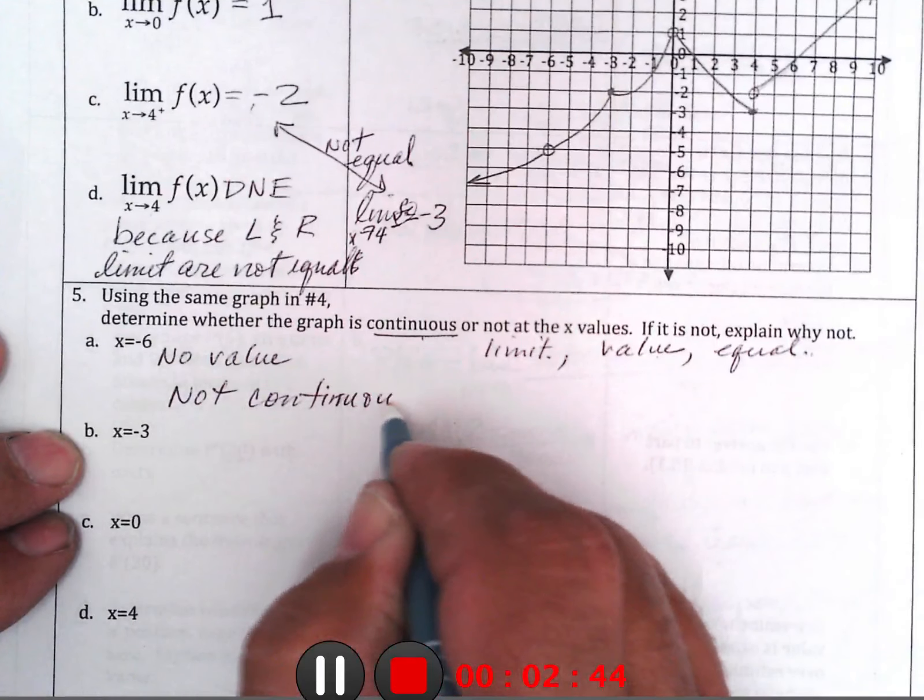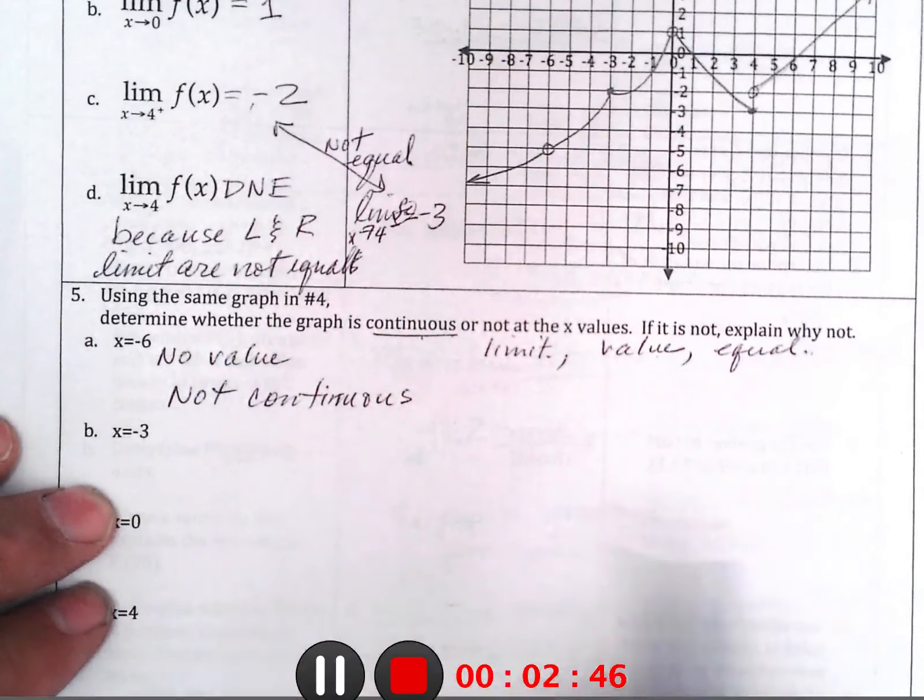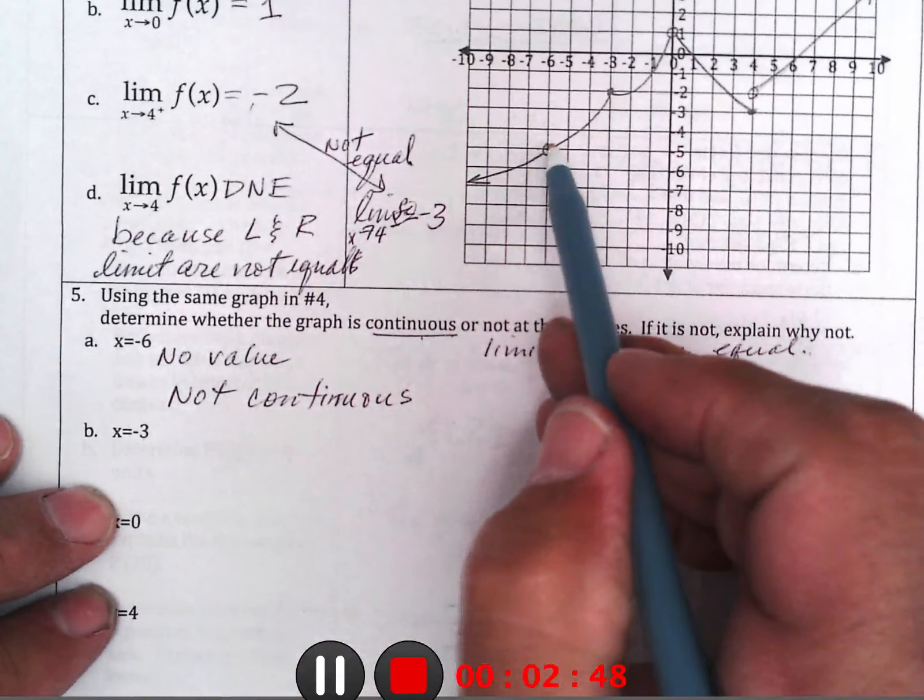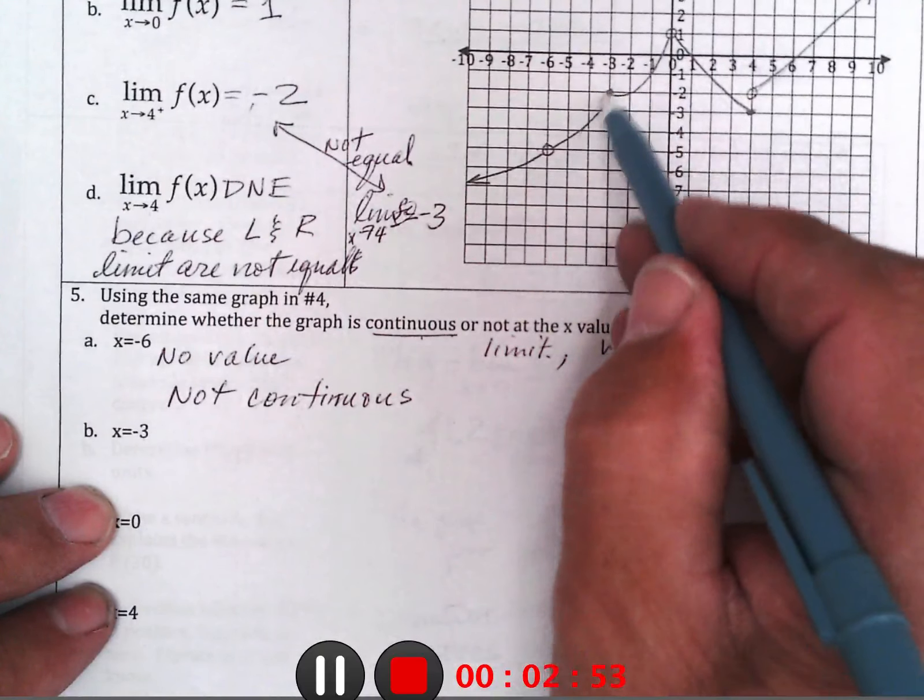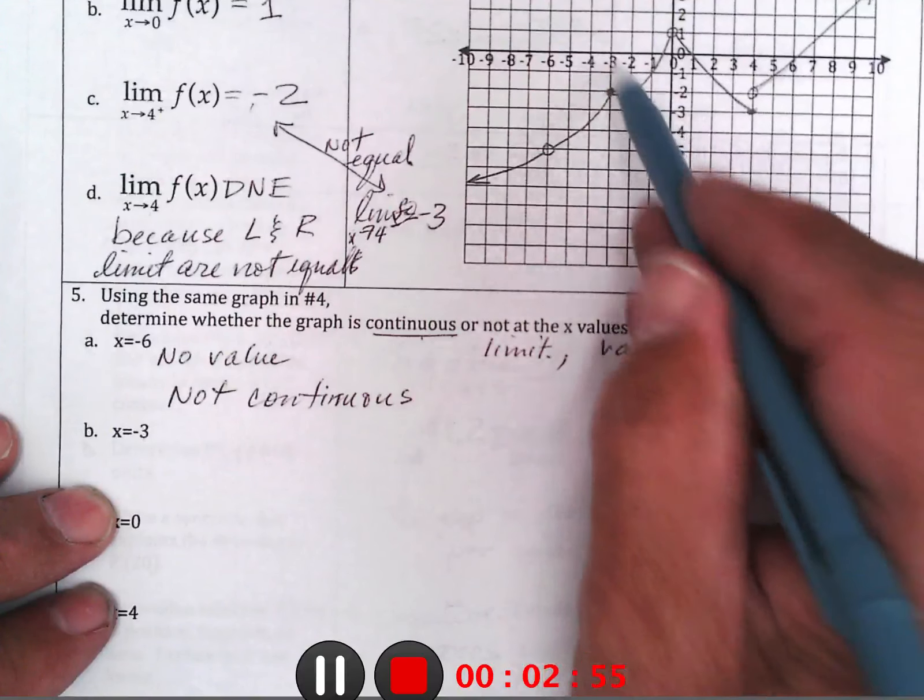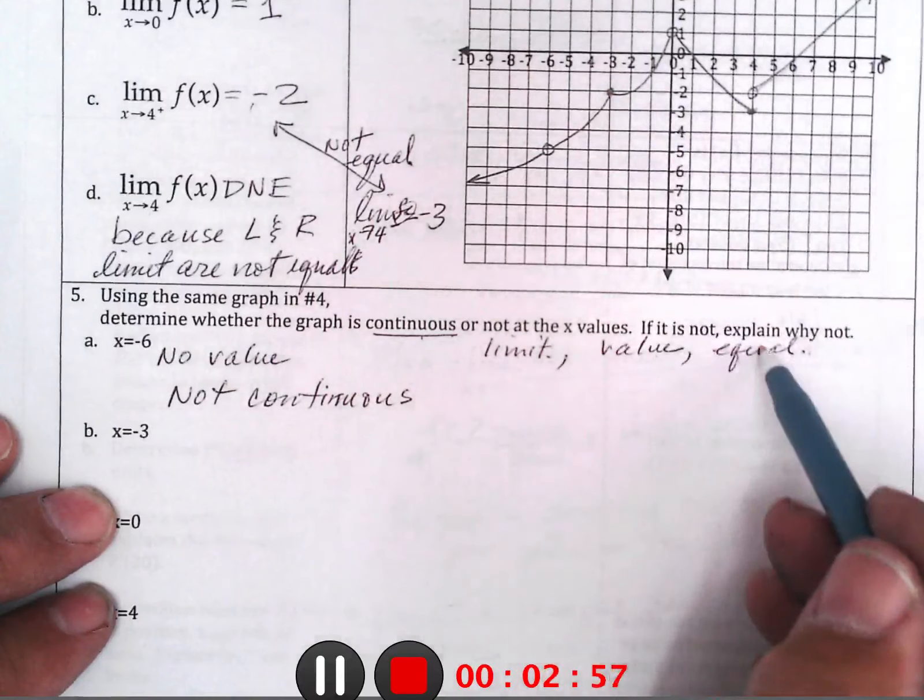At x equals minus 3, it has a limit, which is negative 2, has a value, negative 2, and they're equal, so continuous.